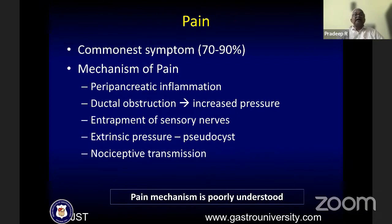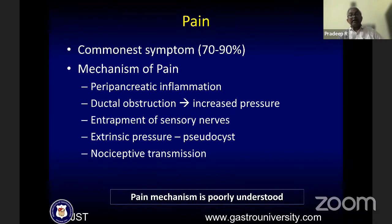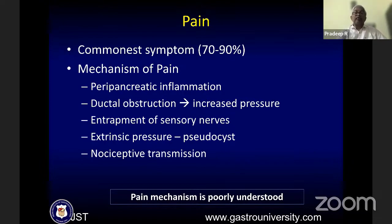The commonest symptom is pain and the mechanism of pain is poorly understood. That is why there are a lot of treatment failures — we do not understand why this pain occurs. The conventional theory is ductal obstruction leading to increased ductal and parenchymal pressure, causing pain. Decompression of this obstruction should relieve pain, but it does not always happen. In some patients, even when the duct is not dilated or even after decompression, pain continues — probably due to entrapment of sensory nerves, or nociceptive transmission where the pain may actually originate in the spinal cord or cortex.